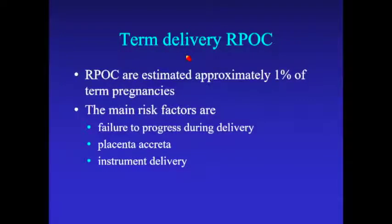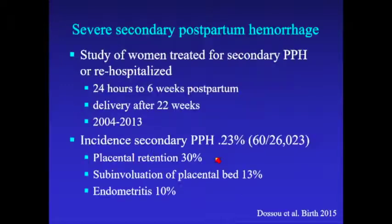Term retained products are thought to occur in about 1% of term pregnancies. The main risk factors are failure to progress during delivery, placenta accreta, and instrument delivery.